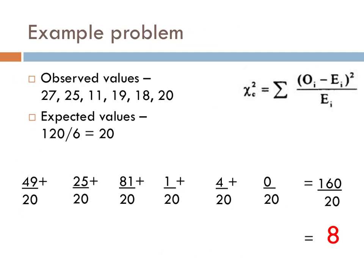After squaring the difference between the observed and expected values for each part of the problem, I came up with the following numerators. Add them all up, since you have the same denominator, and you have 160. Divide the 160 by 20, and your final chi-squared value would be 8.